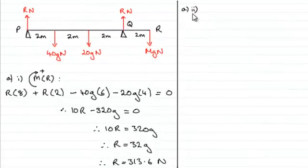Now for part A, part 2, we've got to find M, the mass of this block that was placed at R. And to do this, what we do now is we consider resolving.